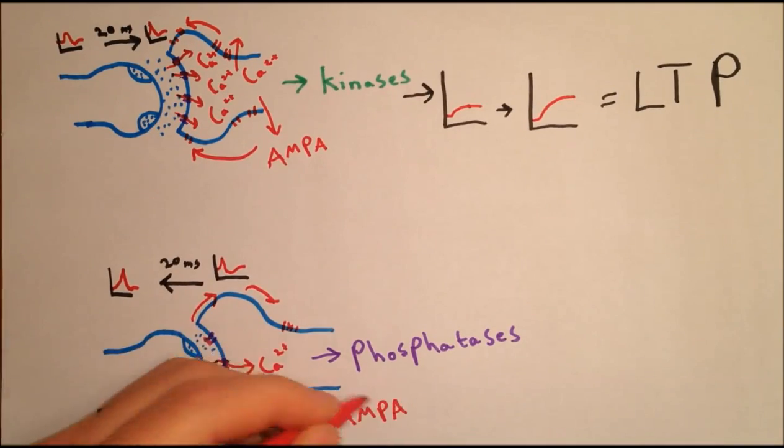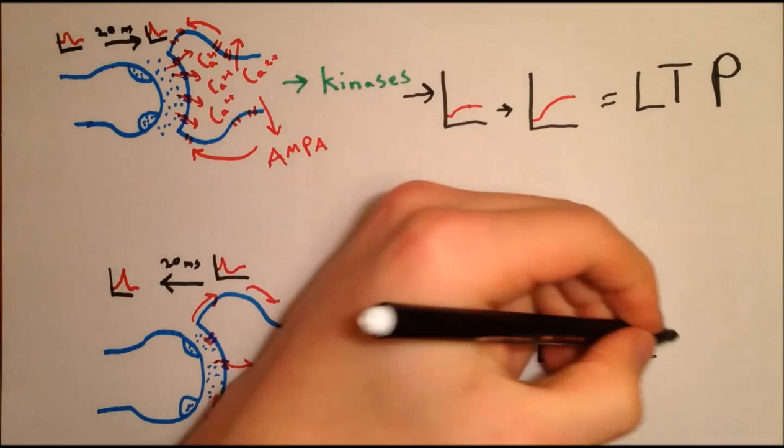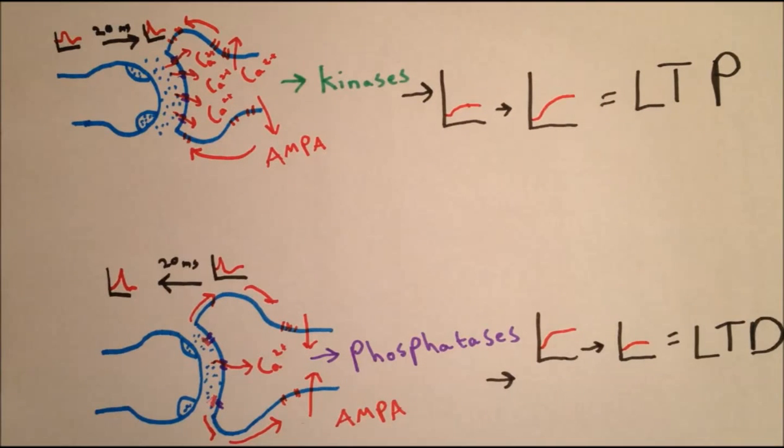Importantly, these processes are localized to individual dendrites, and each dendrite can be modulated individually. This process of weakening and strengthening connections changes the connectivity of the brain, altering the way you'll think and behave in future, and allowing you to learn and change.